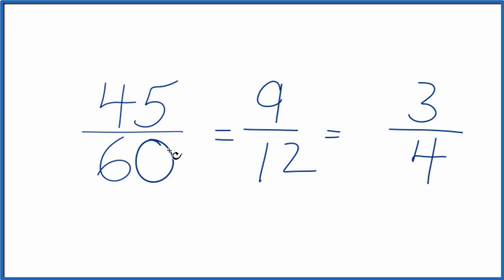Either way, 45 over 60, when we simplify that we get 3 fourths. This is Dr. B.